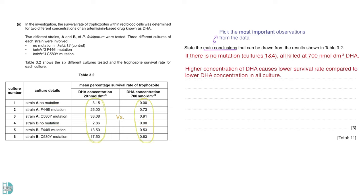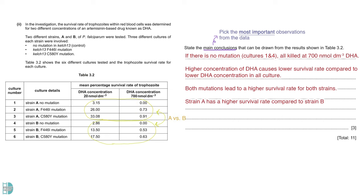In general, for all cultures, higher concentration of DHA causes lower survival rate compared to lower concentration. When you compare the mutated strains with the one without mutation, both mutations leads to a higher survival rate for both strains. If you compare strain A to B regardless of the mutations, strain A has a higher survival rate. Lastly, if you compare the two types of mutations, C580Y causes higher survival rate than F446I.